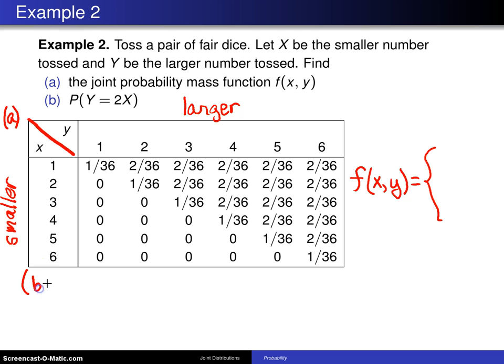Then there is part B, which is find the probability that the random variable y is twice x. That is the probability the larger number is twice the smaller number. Well, all you have to do is go to all of these cases and see where that occurs.